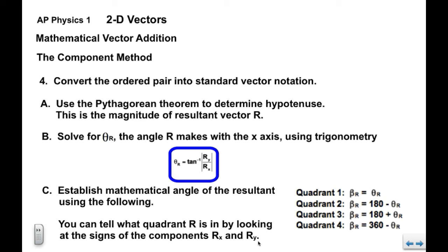If x is negative and y is positive, it's in quadrant two. If they're both negative, r is in quadrant three. And if x is positive and y is negative, r is in quadrant four.